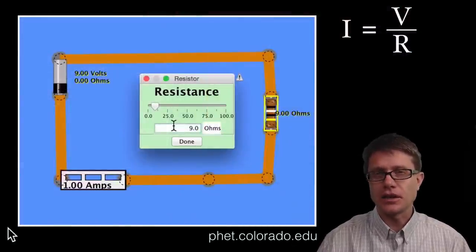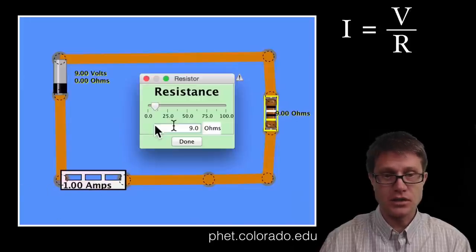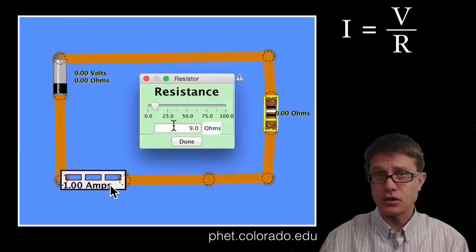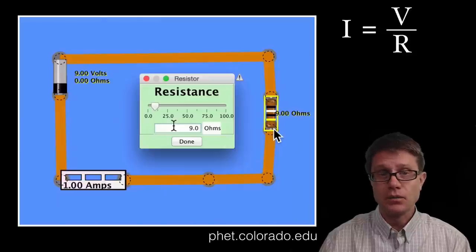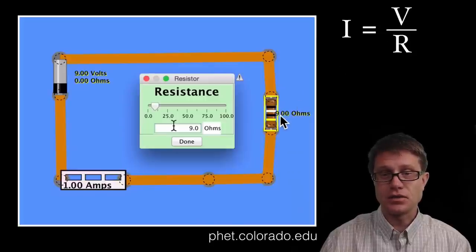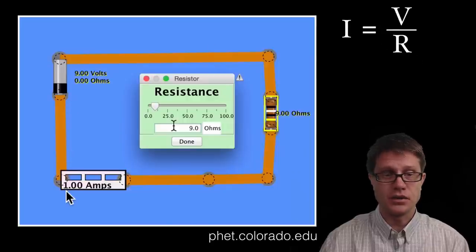Now let's calculate the current across a resistor using a PHET simulation. I have got a battery — you can see it is a 9 volt battery — an ammeter to measure the amps or current, and a resistor. In this case we have a 9 ohm resistor. Using Ohm's law: voltage is 9, resistance is 9 ohms, so current equals 9 divided by 9, giving a current of 1 amp — and you can see that reading on the ammeter.